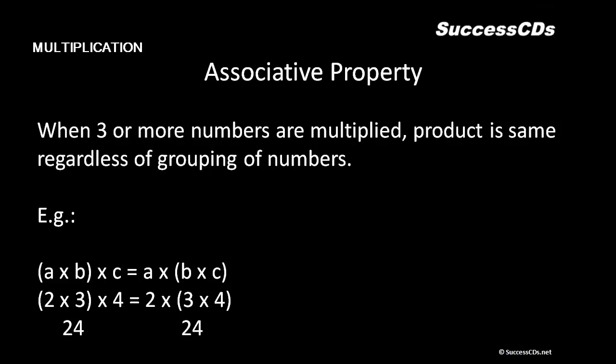Next is the associative property of multiplication: when three or more numbers are multiplied, the product is the same regardless of grouping. With three numbers a, b, and c, I can multiply a into b first and then multiply that product by c, or multiply b and c first and then multiply by a. For example, two into three into four — two into three is six, and six into four is twenty-four. Or three into four is twelve, and twelve into two is also twenty-four.